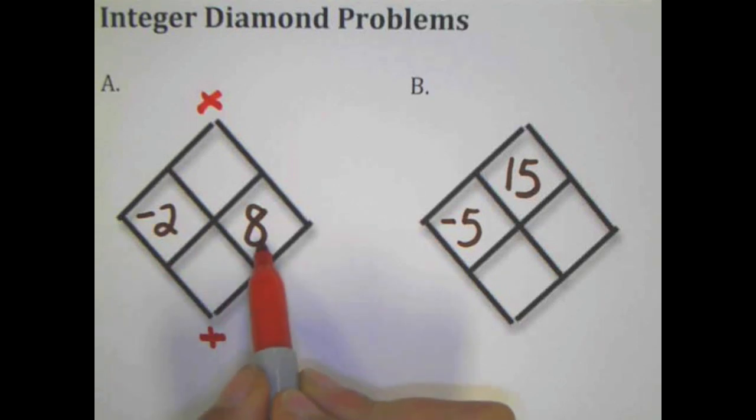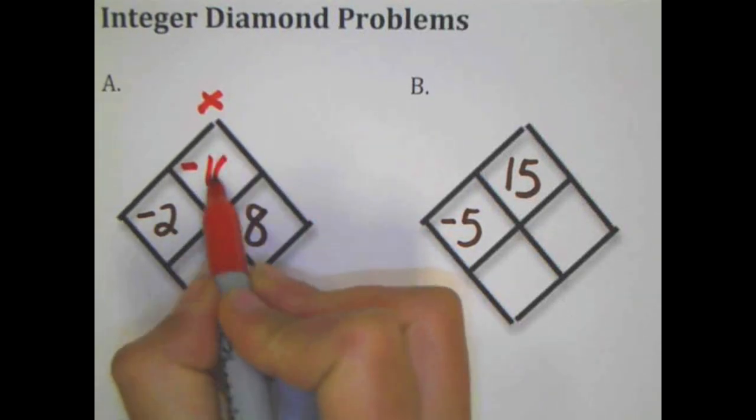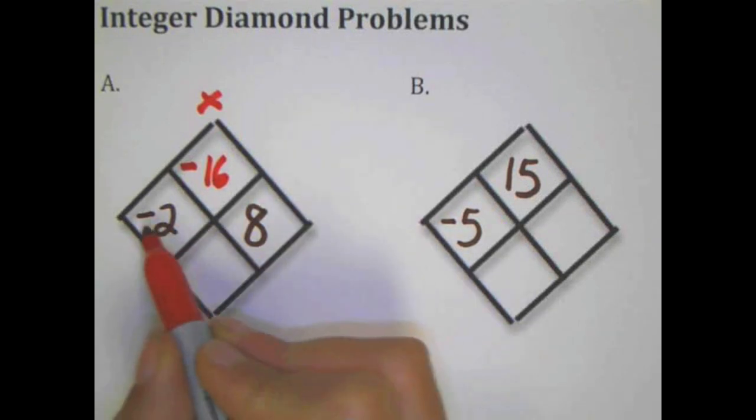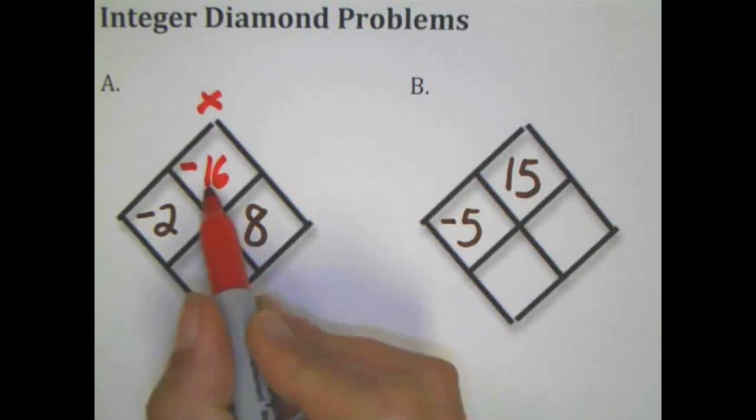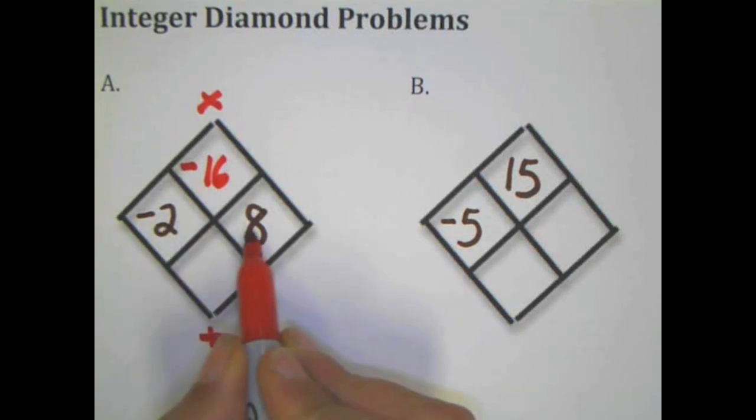So negative 2 times 8: negative times a positive is a negative, 2 times 8 is 16. When I do my integers, I like to do the sign first and then deal with the number. So negative times positive is negative, then deal with the number. Finding the sum, negative 2 plus 8 is 6.